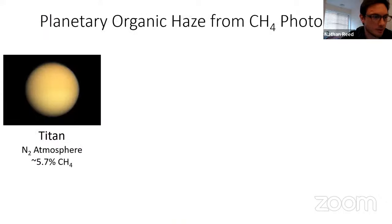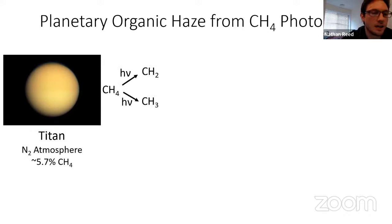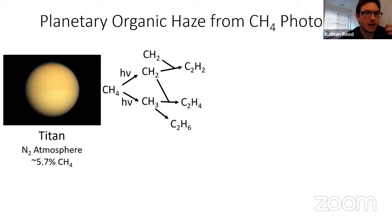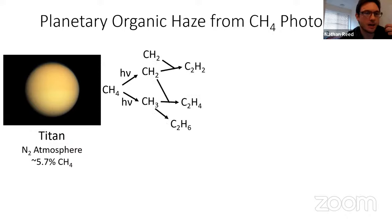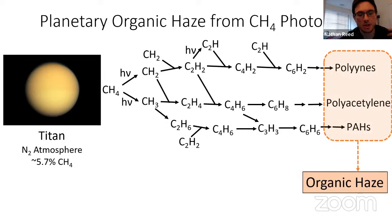Planetary organic haze formation from CH4 photolysis was briefly mentioned in the introductory slides. Titan is a great observable example: its atmosphere is predominantly nitrogen with about 5 to 6% methane. This high methane reacts with ultraviolet light from the sun, splitting into photochemical products that combine into more and more complex organic molecules that can also photolyze and continue to react, eventually condensing into aerosol particles we call the organic haze. Methane photolysis is key here, and methane could have been present on an early Earth.